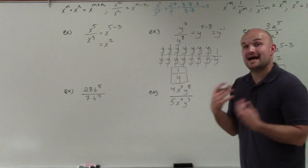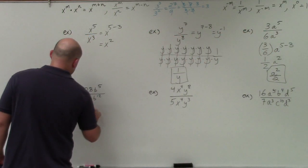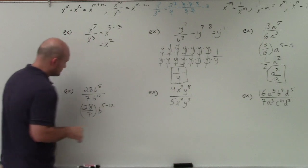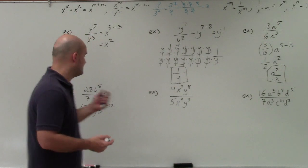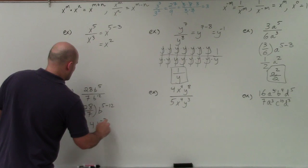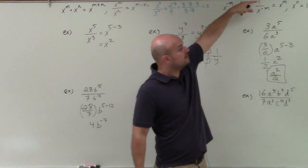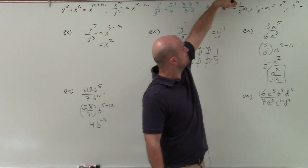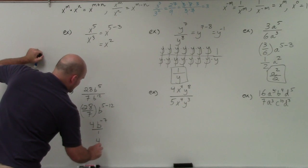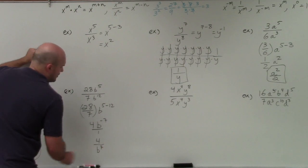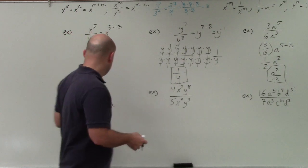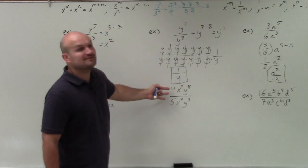Looking at the next one, you're just going to break them apart. So that's going to be 28 over 7 times b to the fifth minus 12. Now 7 actually does divide into 28 — four times. And then we have b to the negative seventh. Using the negative exponent rule, I can rewrite that in the denominator. So the final result is 4 divided by b to the seventh.